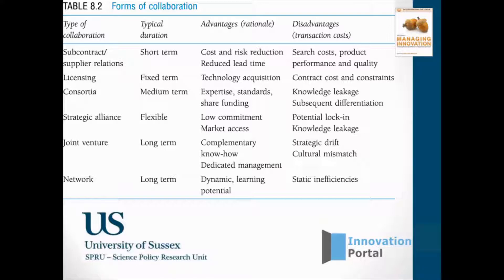And sometimes that can spread to things like products and service development — you'll work with some of those partners where possible. There are classic examples where most of the innovation happens in the supply chain. Things like the food industry: if you look at the food industry empirically, you find that most of the innovations about storage, packaging, and logistics happen and originate from suppliers, not from retailers, not from users. So it's a particular type of supply chain innovation.